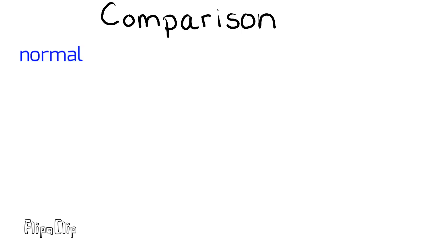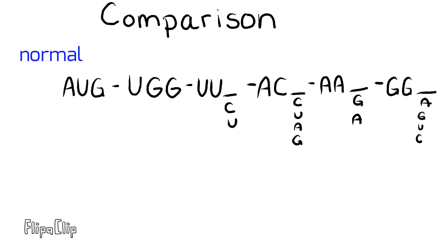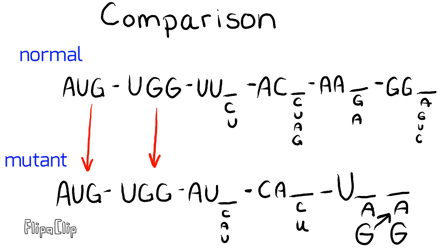Now, it's time to compare the mutant and normal mRNA strands. When putting the strands side by side, you can see that the first and second codons are the same.